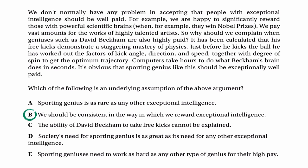The right answer is B: 'We should be consistent in the way in which we reward exceptional intelligence.' This has to be true for the argument to work. We need to think we have to be consistent in how we reward exceptional intelligence; otherwise, the fact that we reward other types of intelligence so highly wouldn't be any reason for thinking we should pay sporting geniuses really highly. Using the negative test: 'We don't need to be consistent in the way we reward exceptional intelligence' — that destroys the argument. If it's okay to be inconsistent, then it's okay not to pay sporting geniuses lots of money. So B is definitely the right answer.